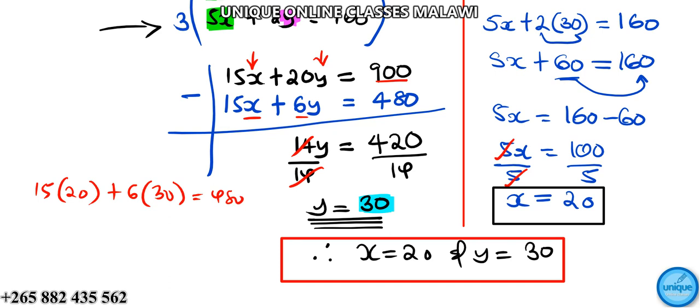We can verify: multiplying gives 60 plus 120, which equals 180. The other equation also checks out as 480.